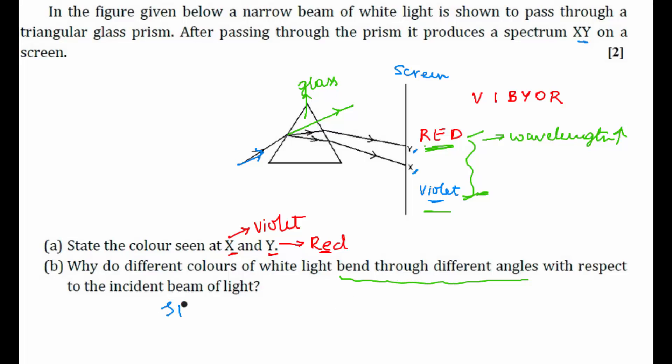So the reasons are speed is different. Why speed is different? Because wavelength is different for different colors.